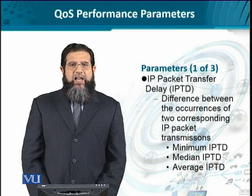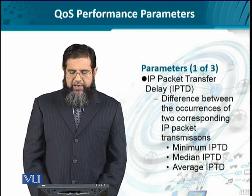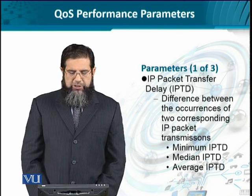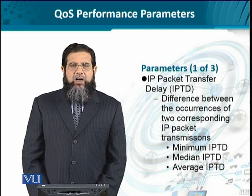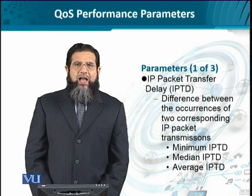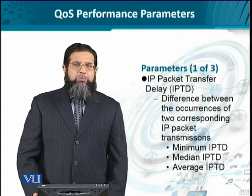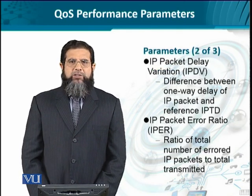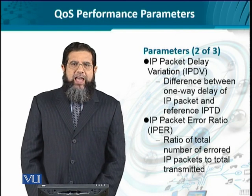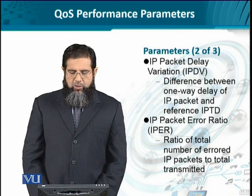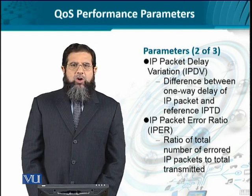From the pure IP perspective, certain parameters define exactly how a QoS class can be provisioned. The first is IP Packet Transfer Delay (IPTD), which is the difference in the occurrence of two transmission events. This can be expressed as average, maximum, minimum, or median transfer delay. Each intermediate device such as a router or switch processes an IP packet, contributing to this delay. Any variation in it is compared to a reference IPTD.